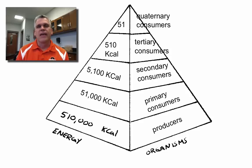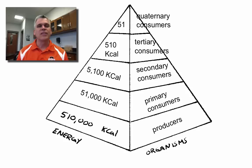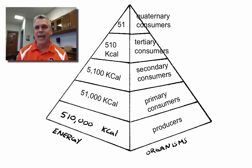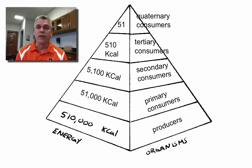Think about it like this: if that quaternary consumer needs 51 kilocalories of energy every day to survive — which is actually a fairly low number — that means the ecosystem has to provide 510,000 kilocalories of energy at the producer level every day just to maintain that one individual. This shows us why there cannot be very many quaternary consumers in an ecosystem.